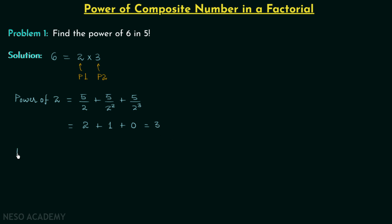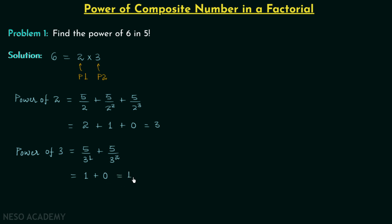Now we will find out the highest power of the second prime number, 3, in 5 factorial. We have floor(5/3¹) + floor(5/3²). 3² equals 9, and since 9 is larger than 5 we stop there. floor(5/3) = 1, floor(5/9) = 0. So 1 + 0 = 1. The highest power of prime number 3 in 5 factorial is 1.